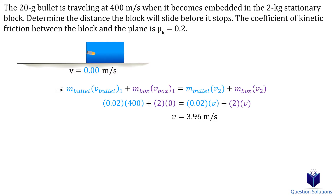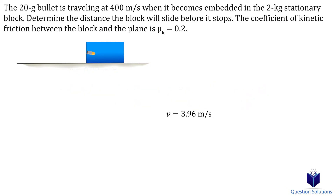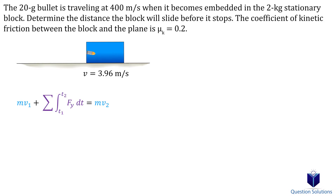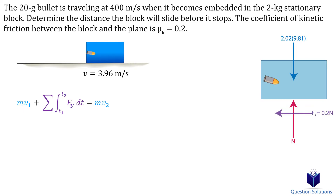The next step is to figure out how long it took for the block to stop moving. We can figure that out using the principle of linear impulse and momentum, since we have forces, time, and velocity. Let's quickly draw a free body diagram of the block — we have the weight, normal force, and friction. The mass of the block is actually the mass of the bullet plus the mass of the block, since the bullet is embedded.